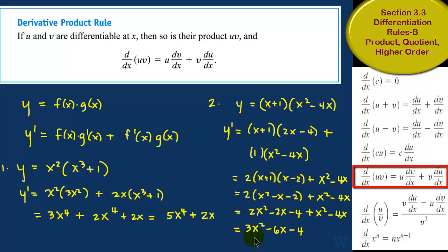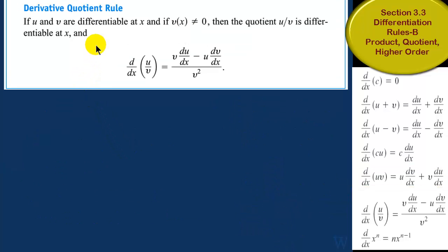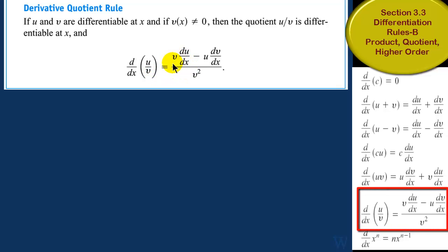So that's a derivative by applying the product rule. Now let's look at the quotient rule. The derivative of u over v: first you take the derivative of the top times the function at the bottom, minus the derivative of the one in the denominator, dv by dx, times the function in the numerator. The whole thing is divided by the square of the function in the denominator.